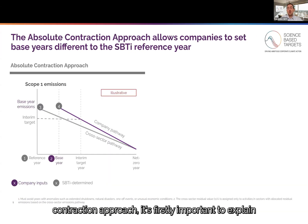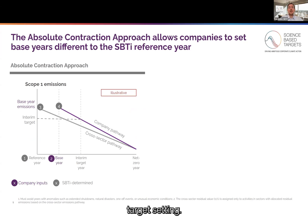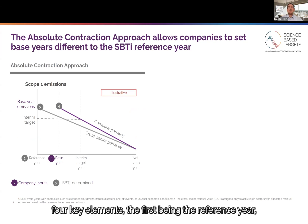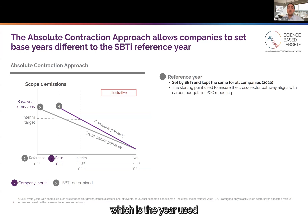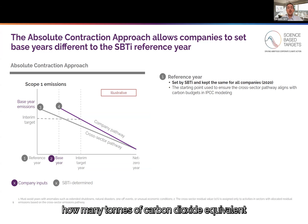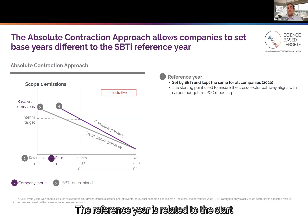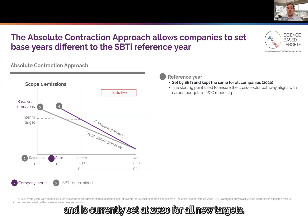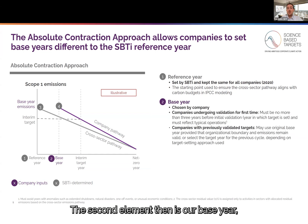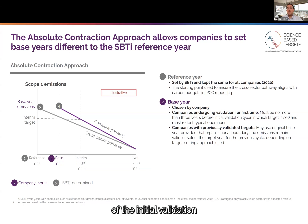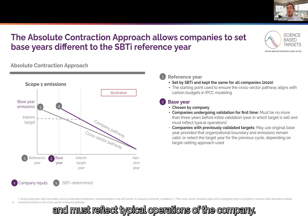Before diving into the updated absolute contraction approach, it's firstly important to explain some of the key terminology relevant to Scope 1 target setting. The absolute contraction approach involves four key elements. The first is the reference year, which is the year used when calculating the company's carbon budget. The company's carbon budget represents how many tons of carbon dioxide equivalent the company can emit over a number of years to be considered 1.5-degree aligned. The reference year is related to the start year of the underlying SPTI pathways and is currently set at 2020 for all new targets. The second element is the base year, which is the starting year for the target chosen by the company, and it must be within three years of initial validation and must reflect typical operations of the company.